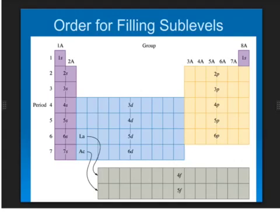So rather than having to remember that diagram with the little arrows going through all of the sublevels every single time you want to write an electron configuration, it's a lot easier if you can just look at the periodic table and get the information that you need.